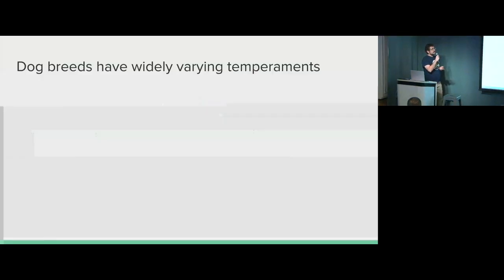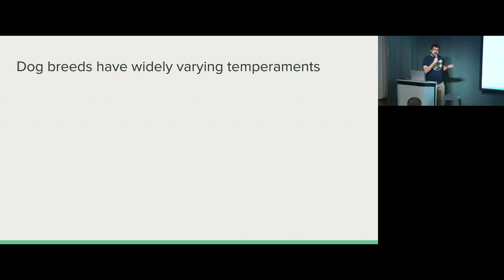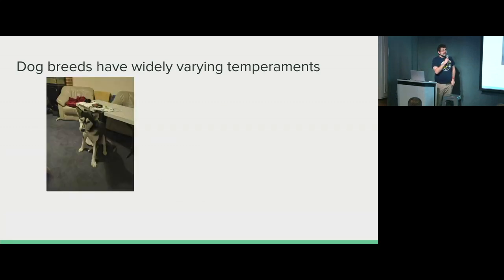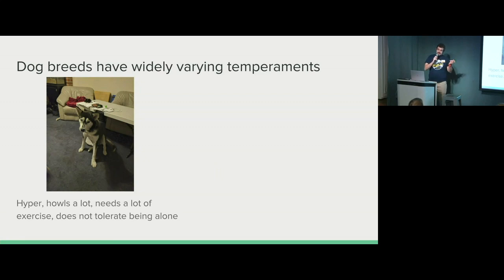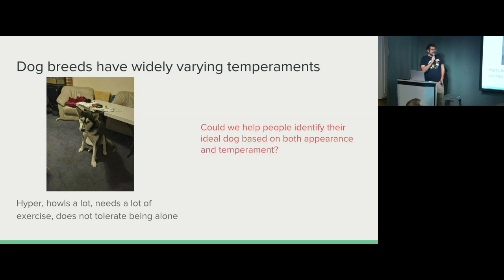So why did I think to do this? Dog breeds have widely varying temperaments, but people usually get dogs based off their appearance — like, oh, that dog's cute, I should get it. I had a bad situation involving this where my housemate decided it was a great idea to get a husky. Huskies are hyper, howl a lot, need a lot of exercise, and do not tolerate being home alone — which really didn't fit my housemate's lifestyle, considering he's never home and the most exercise he gets is opening a bag of chips. So I thought, could we help people identify their ideal dog based both on appearance and temperament?